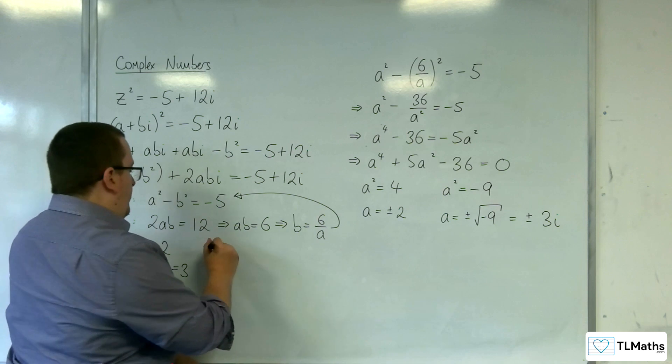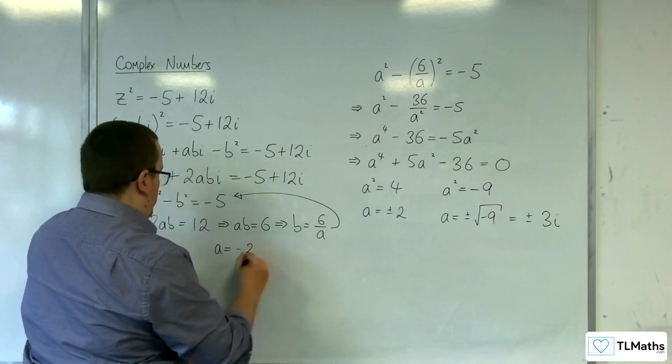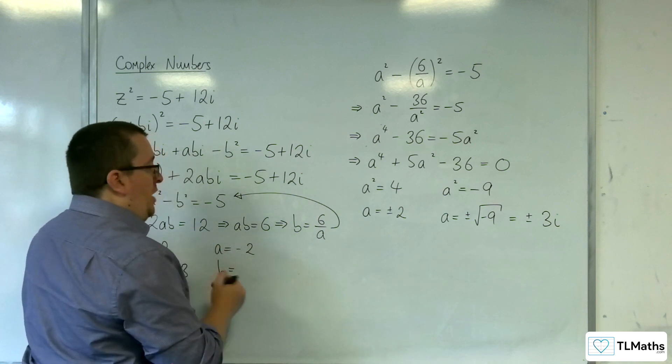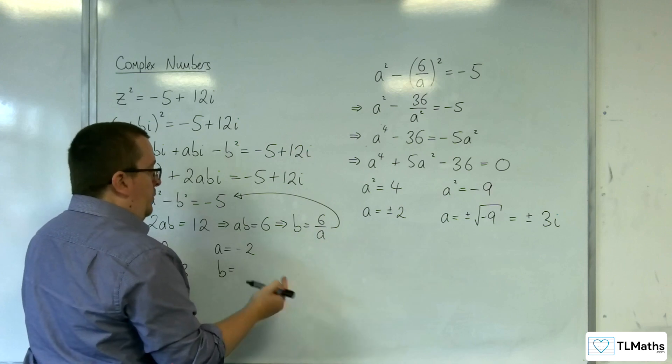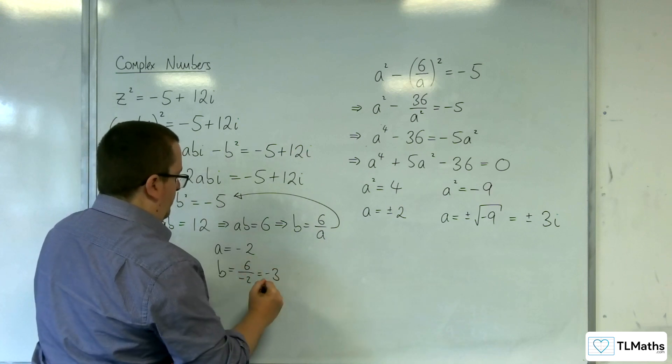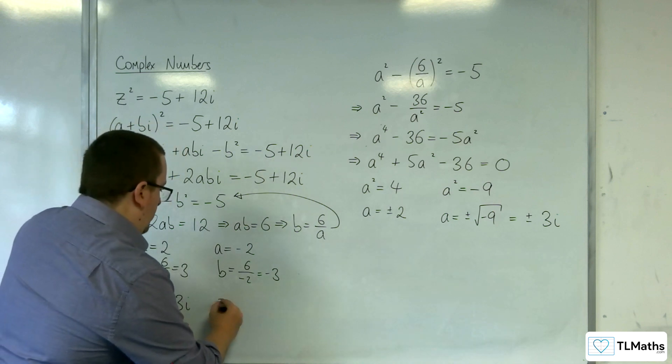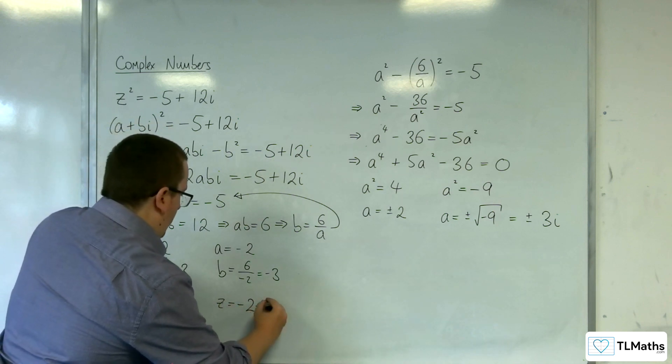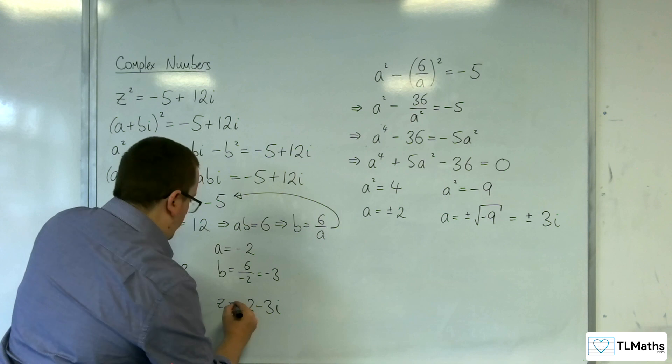Alternatively, we've got a is equal to -2, in which case b would be 6 over -2, which is -3. So, z could be -2, take away 3i.